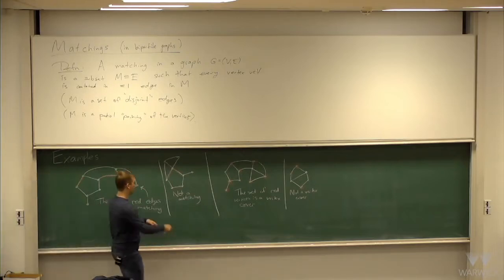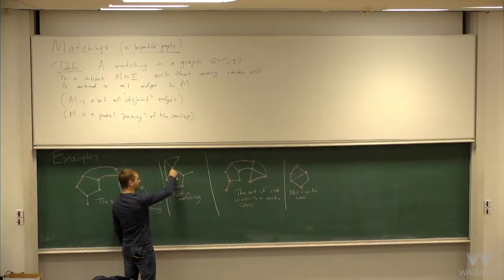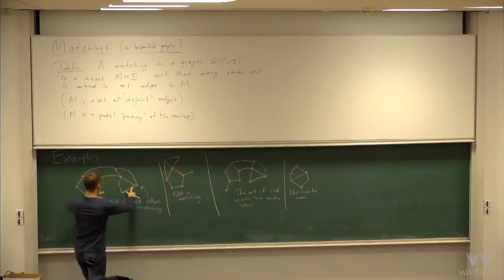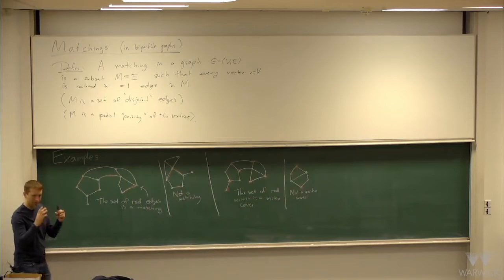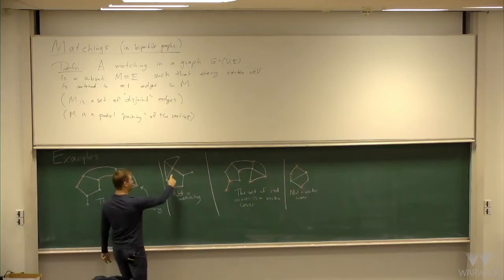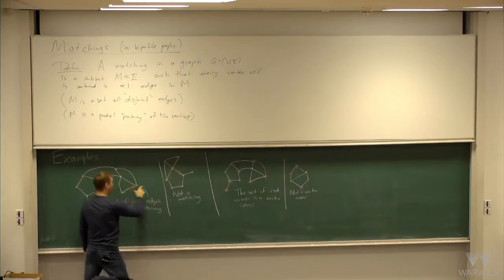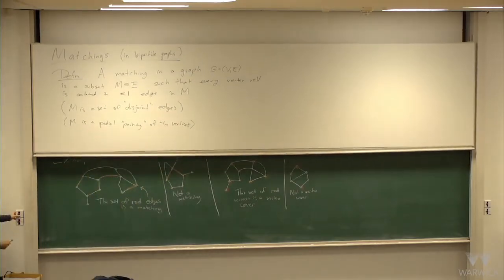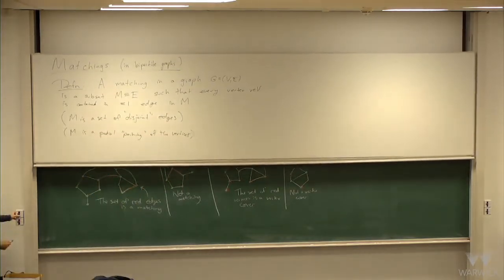If you think of edges as not disjoint because they have an endpoint in common, whereas these edges are disjoint — so if you think of an edge as the set containing its endpoints, these would be non-disjoint edges because they have an endpoint in common, whereas these are disjoint edges.